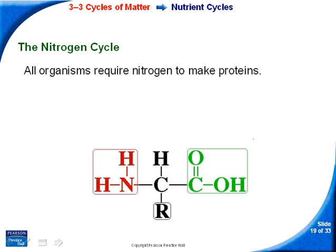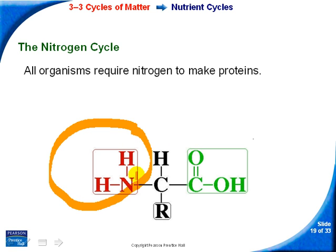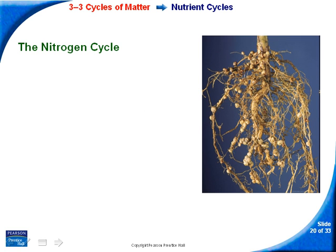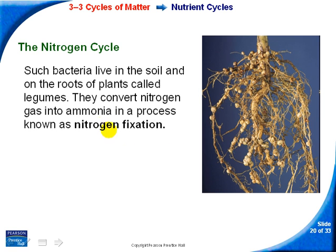The nitrogen cycle. Nitrogen is important because it makes up proteins. Most of the air around us is made of nitrogen, but we can't just take nitrogen gas out of the air — but bacteria can. The way bacteria do this is through a process called nitrogen fixation.